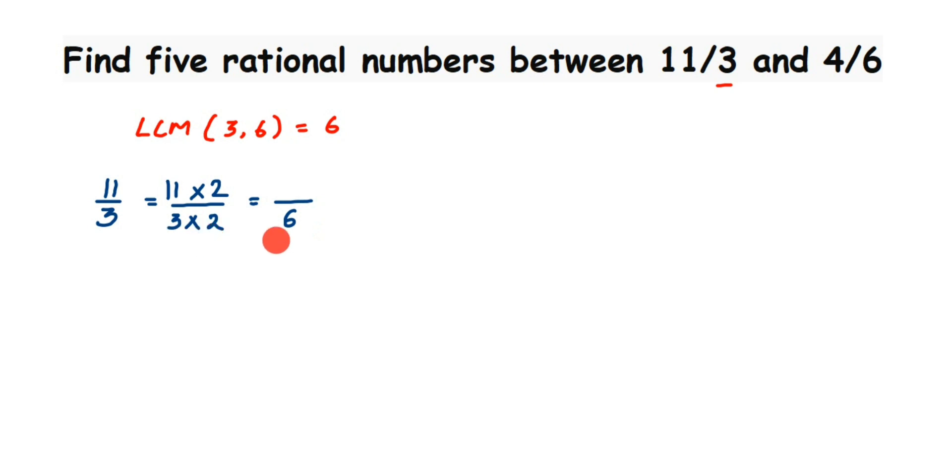3 times 2 is 6 and 11 times 2 is 22. If you see the second number here, 4 by 6, we already have 6 in the denominator so we don't have to change it. We can keep it like that. In case it is not same, like it's different, then you have to again find the equivalent rational number and bring it to 6.